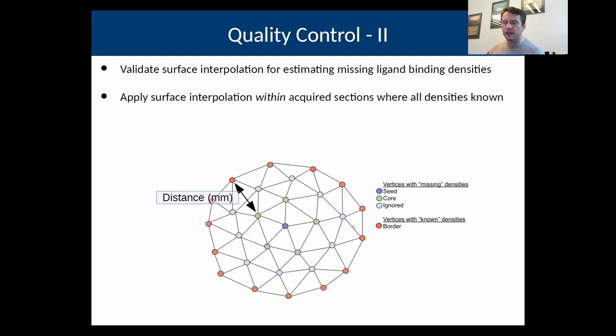To do that, I have a little toy example here, where we have a bunch of vertices. The idea is that we, in theory, know the receptor densities at all of these vertices. But we can knock out a core of them, these ones here, the green and purple. Then using the known receptors, the ones that are in red border, we can estimate how well we recover these values. We can create a certain distance between the known values and the vertices to be estimated.